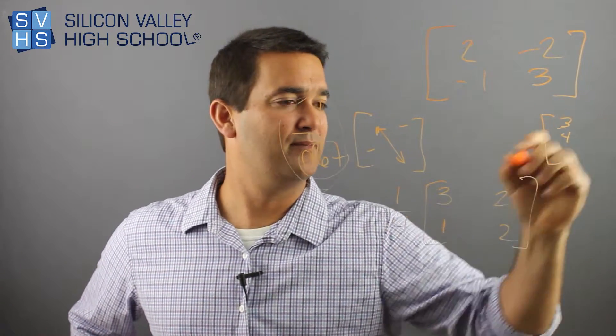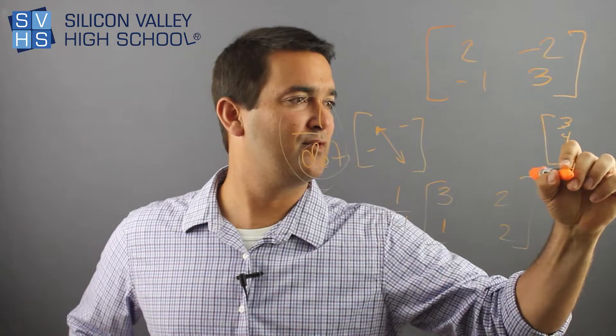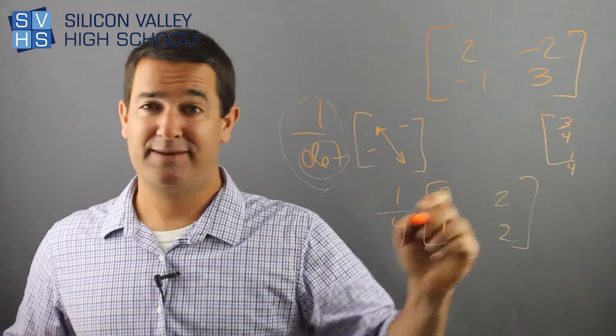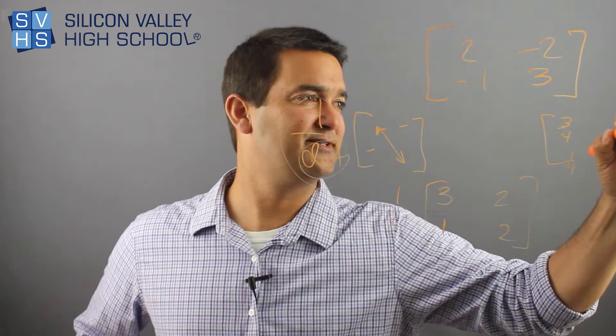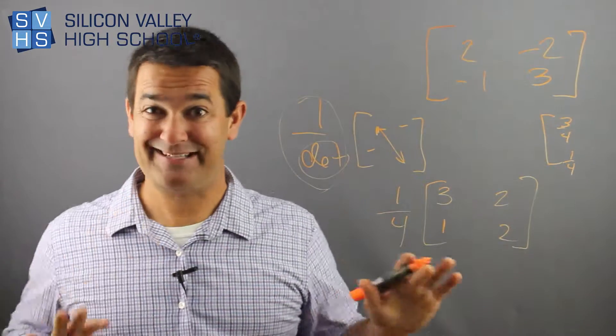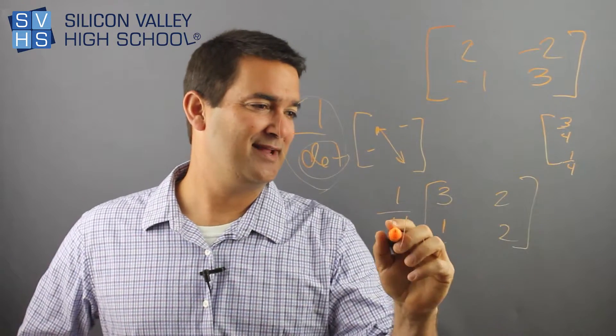1 over 4 times 1. That's 1 over 4. 1 over 4 times 2 is 2 over 4. I'm just going to reduce it because I'm a math teacher. I just did that in my head all pretty quick. So that's 2 over 4. And then again,